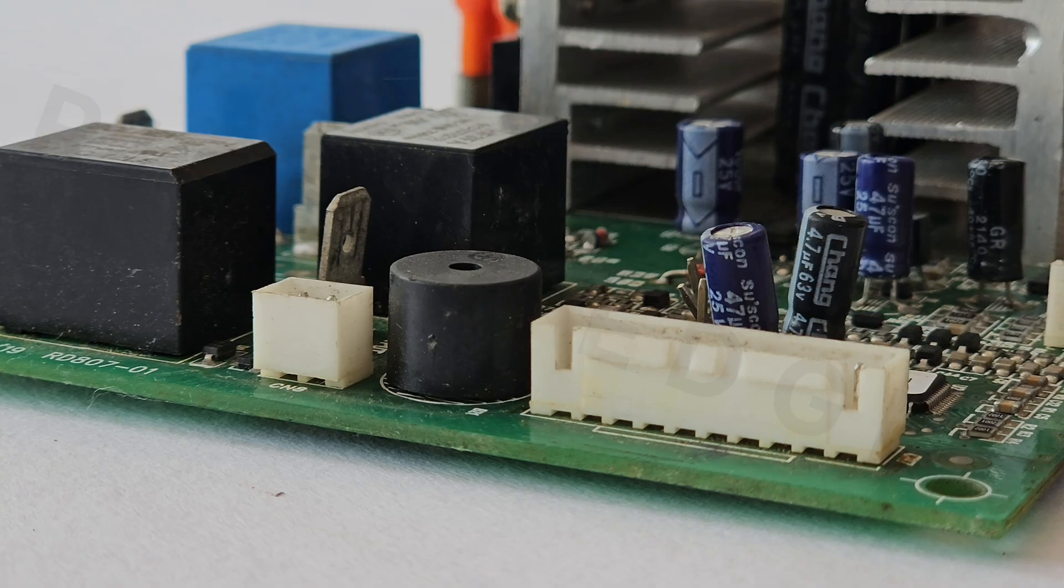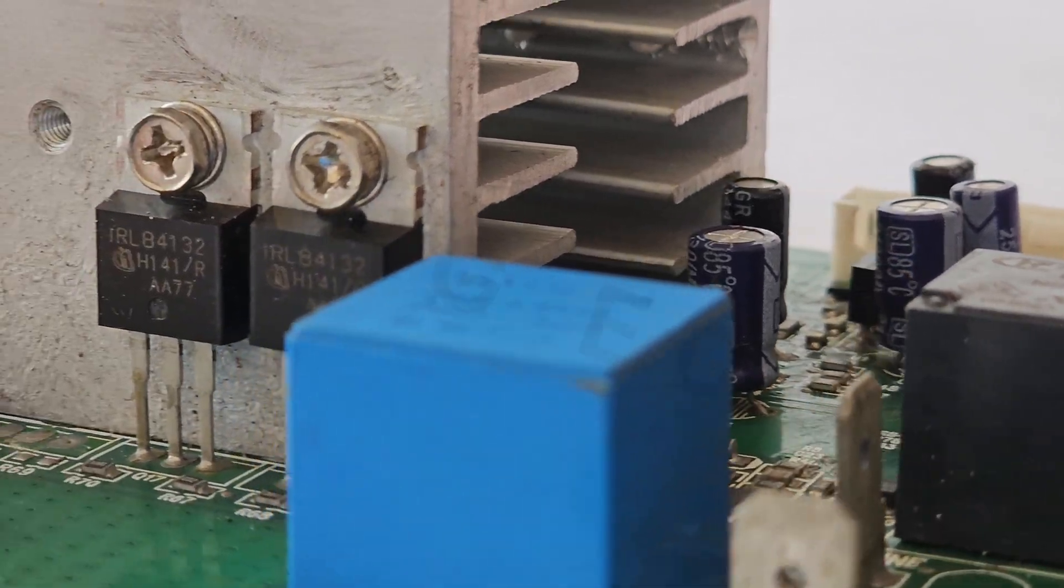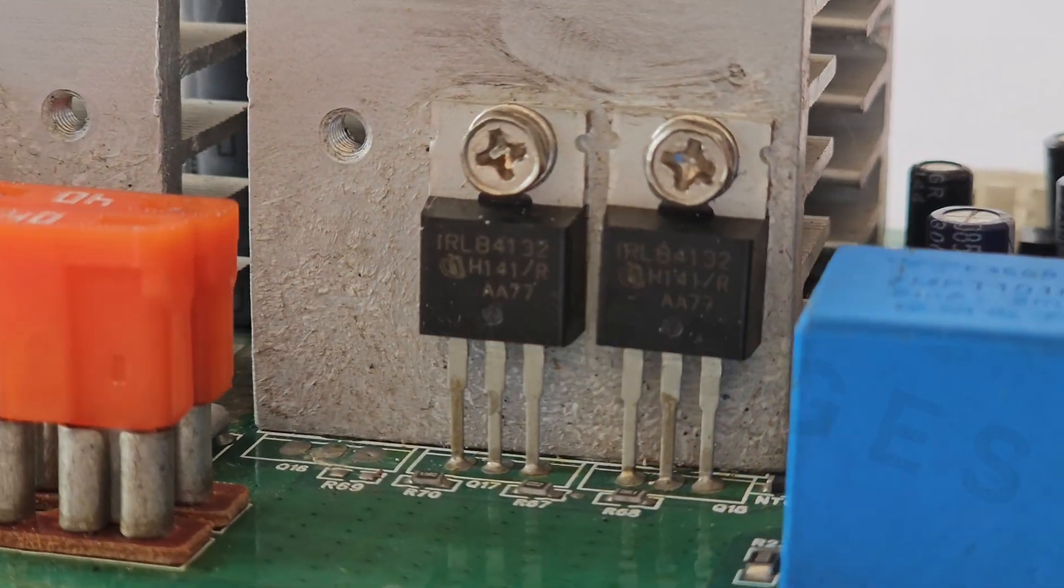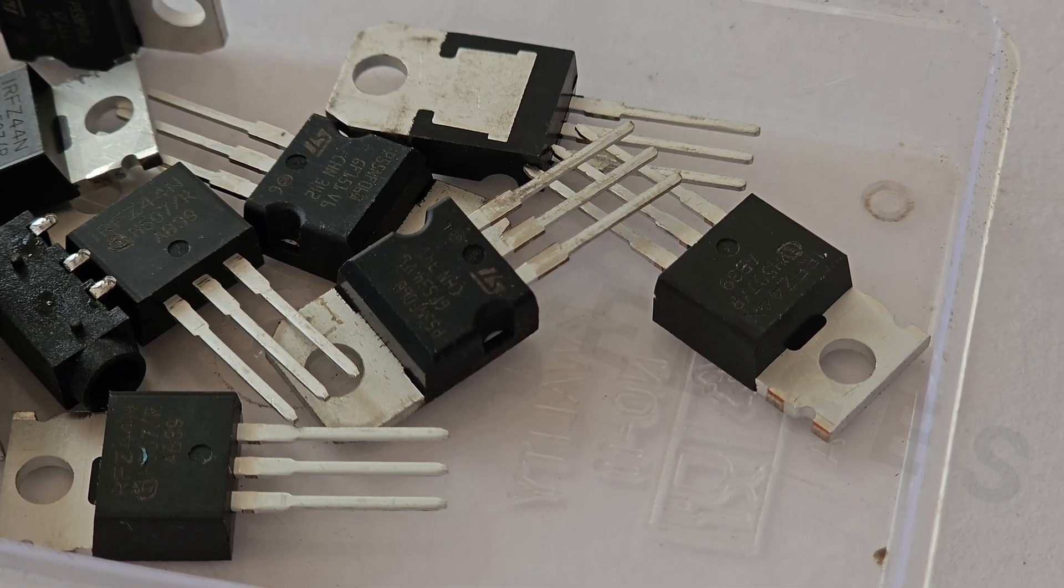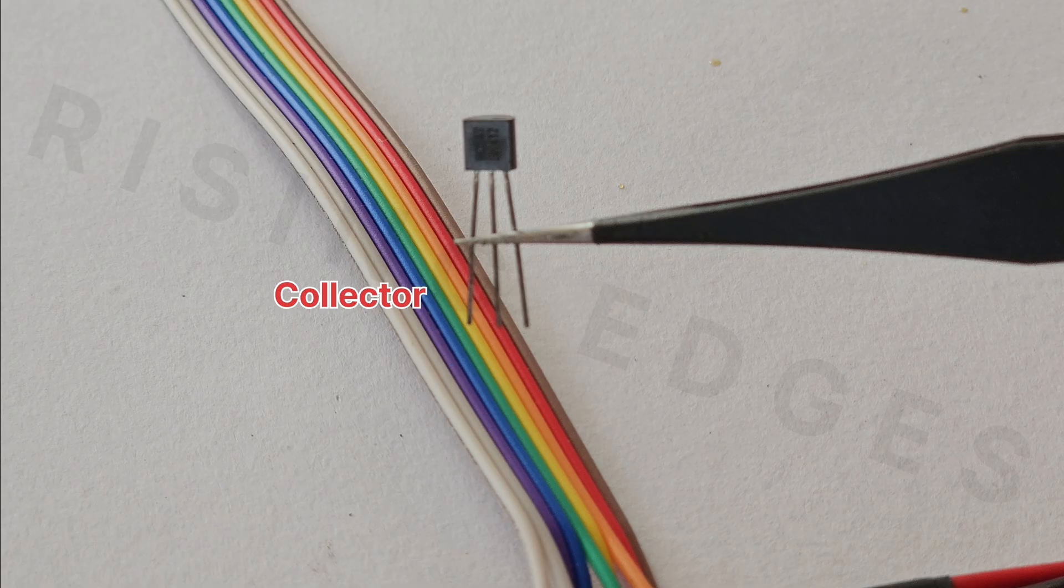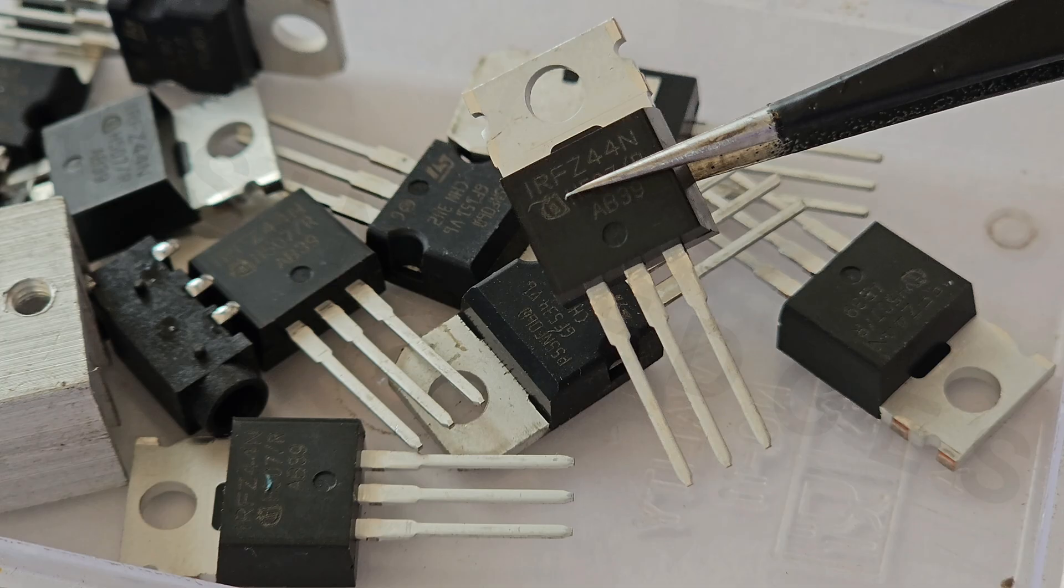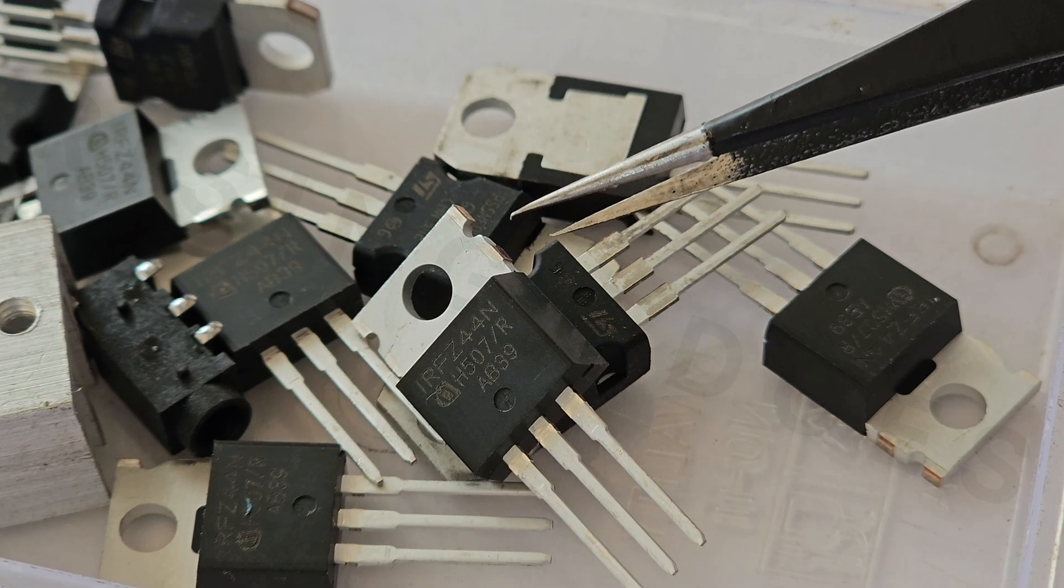While components like diodes, capacitors and transformers all play a role, the real star of this show is the fully controlled semiconductor switch MOSFET. These three terminal devices come in various shapes and sizes. Unlike BJTs where the emitter, base and collector terminals can vary, MOSFETs have a consistent pin layout. The gate, drain and source are always in same positions across all through-hole packages.